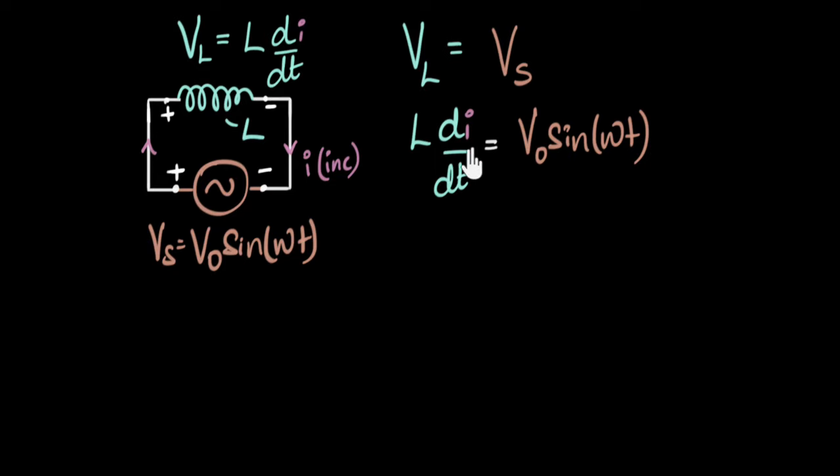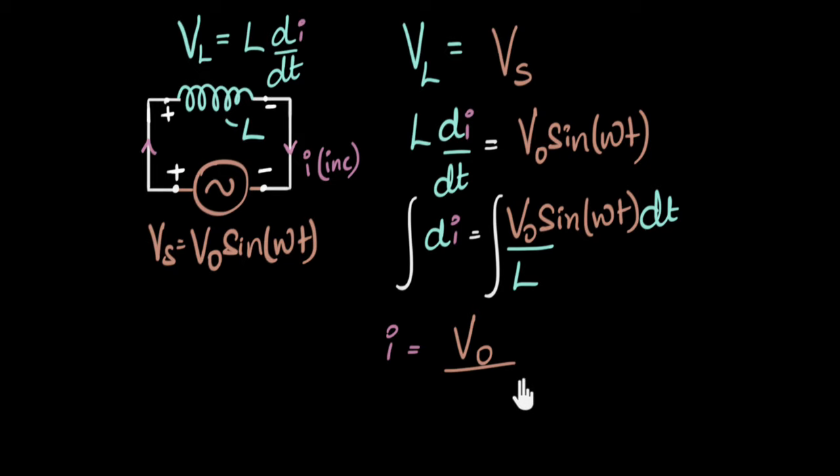All right. So I'm gonna rearrange just to have di on one side. So left side will only put di. And so on the right side, if I just rearrange, I'll get V_0 sin(ωt), I'll get a dt over here and I'll get divided by L. And now, because I've separated the i terms and the t terms, I can integrate. And if I integrate, integral of di is just i. And that equals V_0 over L is a constant. I can pull that outside the integral. And what's the integral of sin(ωt) dt? Well, that integral, I'll directly write the integral over there.